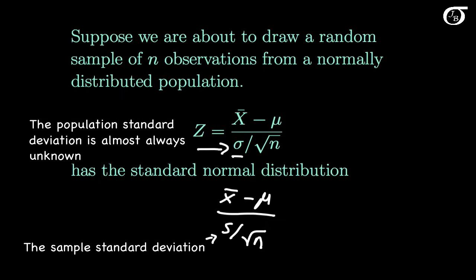But something very fundamental has changed here. Sigma is a constant, but we don't know its value, so we use s, which is a statistic. This statistic s has a sampling distribution and it would vary from sample to sample. So this quantity would no longer have the standard normal distribution, and we label it as t because it has a t-distribution.